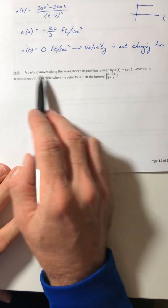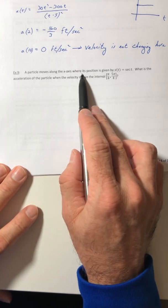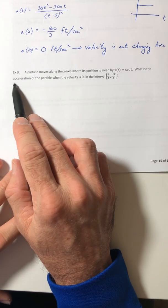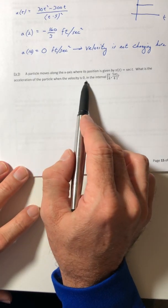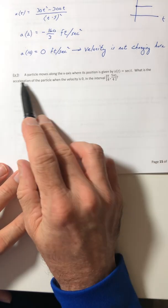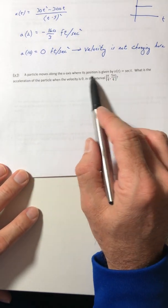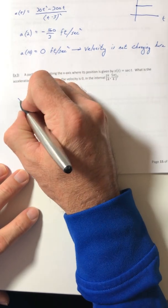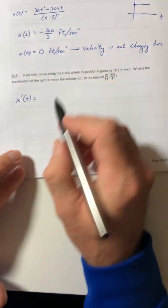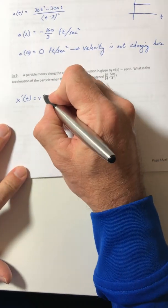Alright. Example 9. A particle moves along the x-axis where its position is given by x of t equals secant to t. What is the acceleration of the particle when the velocity is 0 in this time interval? Alright. So acceleration going from position, so I need the second derivative of position.